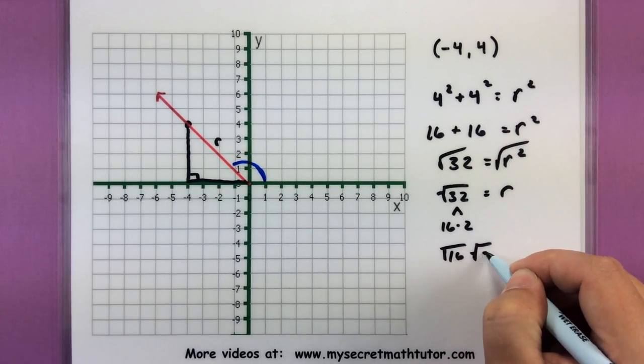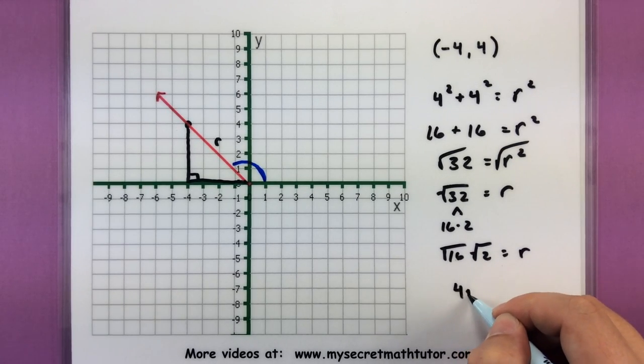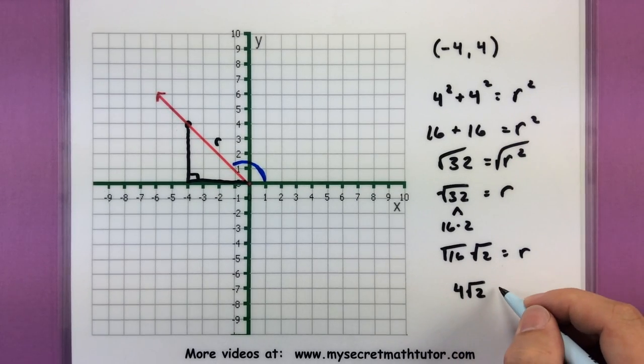So square root of 16, square root of 2. R is equal to 4 times the square root of 2. Nice.